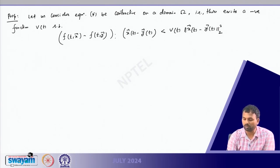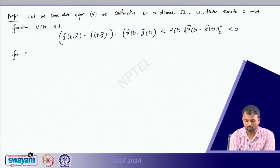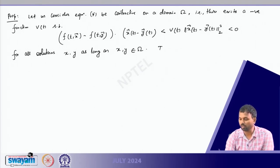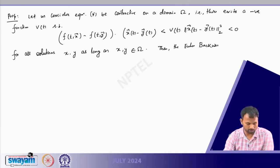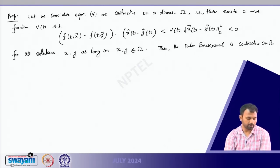If the inner product ⟨f(t,x) − f(t,y), x − y⟩ ≤ ν(t)·‖x − y‖² < 0 for all solutions x, y in Ω, then the Euler backward scheme — which is A-stable — is contractive on Ω.